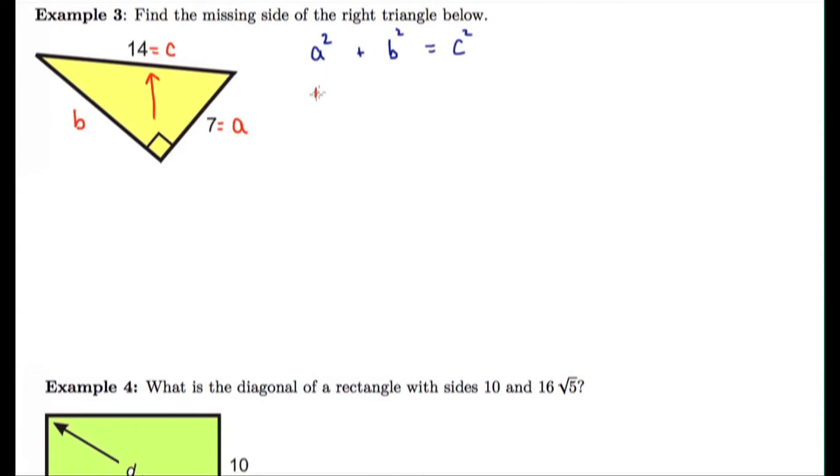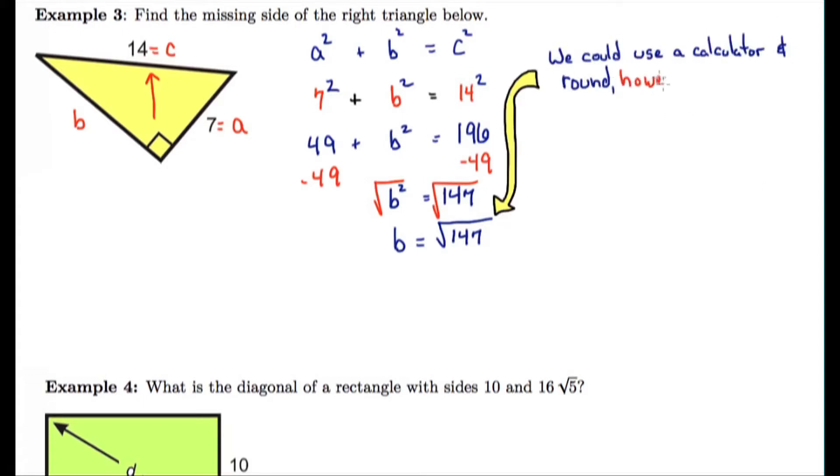Example three. Find the missing side. This time we know the hypotenuse is fourteen and one of the legs is seven. So I'm looking for the other leg. We can call this b that we're looking for. Substitute our knowns into the Pythagorean theorem and we're solving for b. And I need to take the square root to get b by itself. Now, we could just plug this into the calculator and round. However, let's try to simplify in radical form, and that will give us a more exact answer.